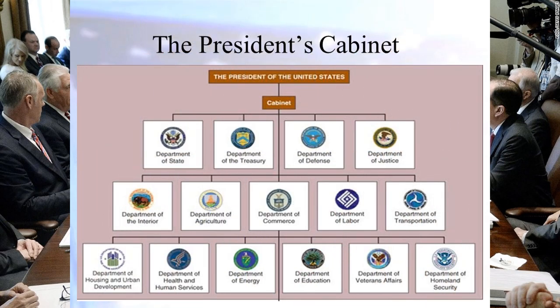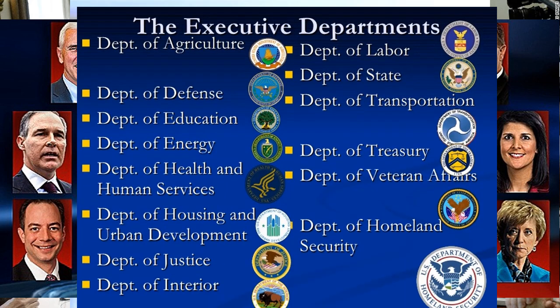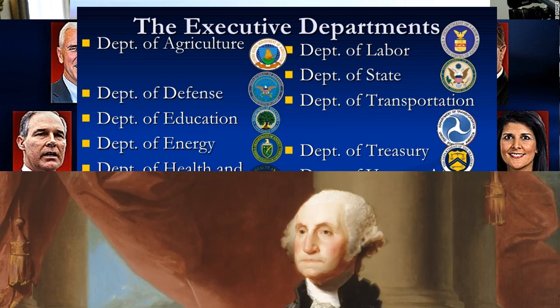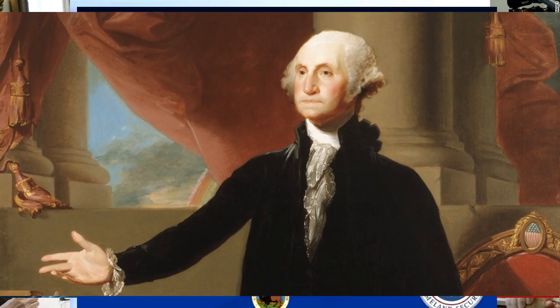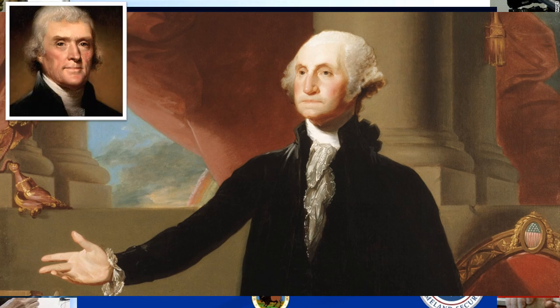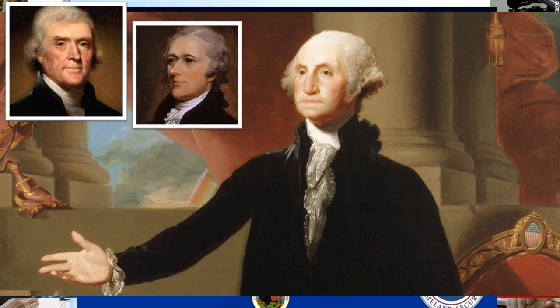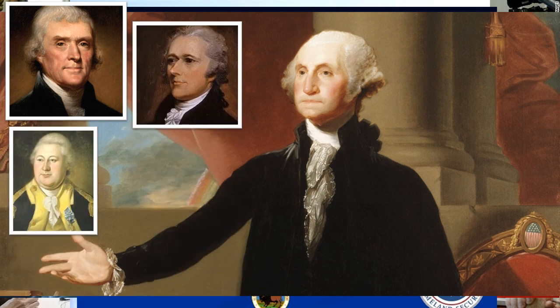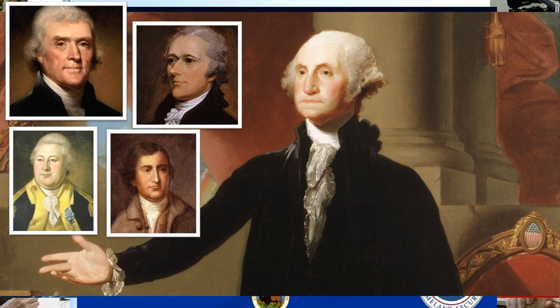The cabinet members are some of the most powerful people in the United States, and each of their departments is important in the running of our country. The cabinet has a long history, all the way back to the first president, George Washington. President Washington appointed a cabinet of four people to help and advise him. The first cabinet included Thomas Jefferson, Secretary of State; Alexander Hamilton, Secretary of the Treasury; Henry Knox, Secretary of War; and Edmund Randolph, Attorney General.